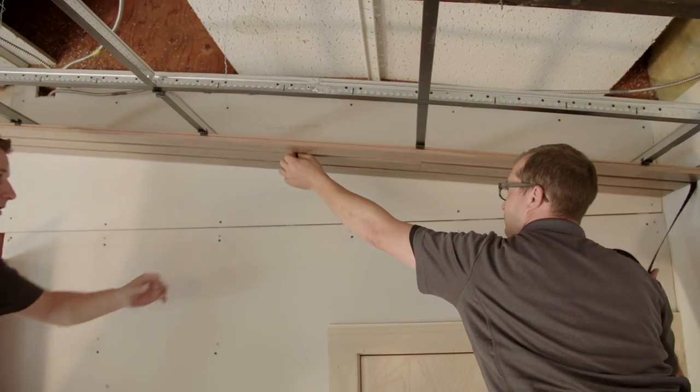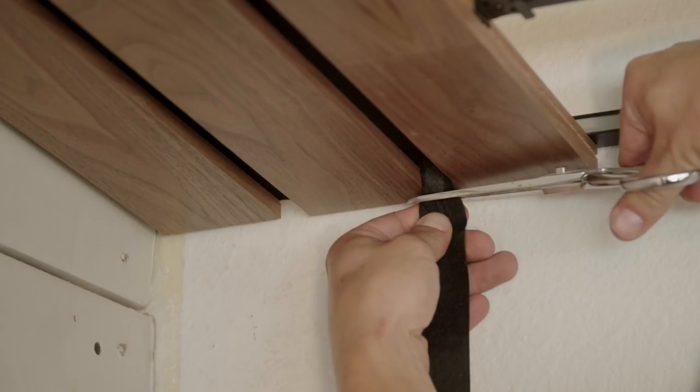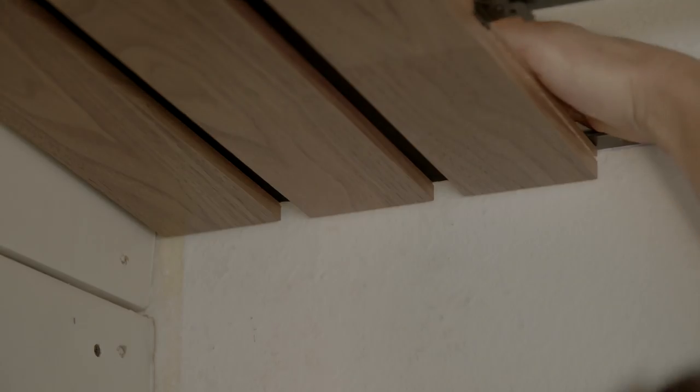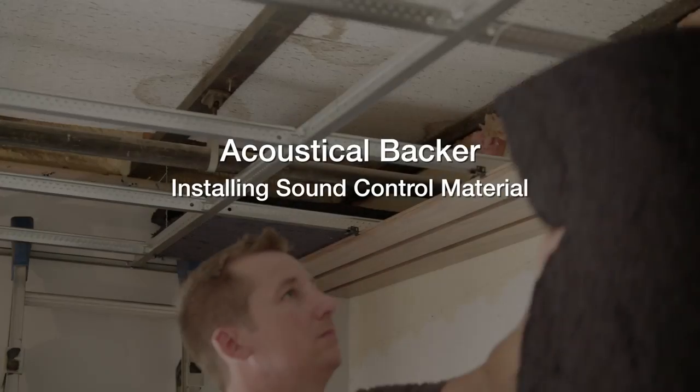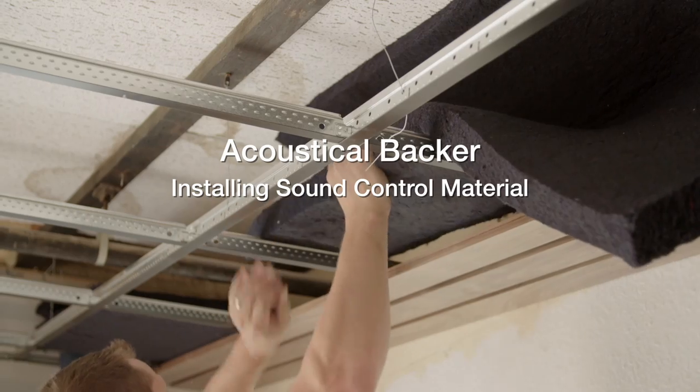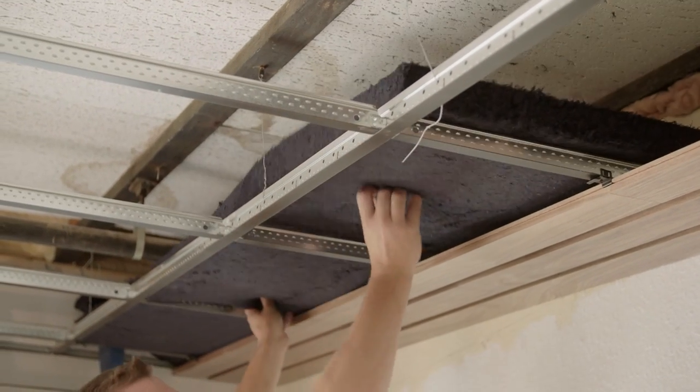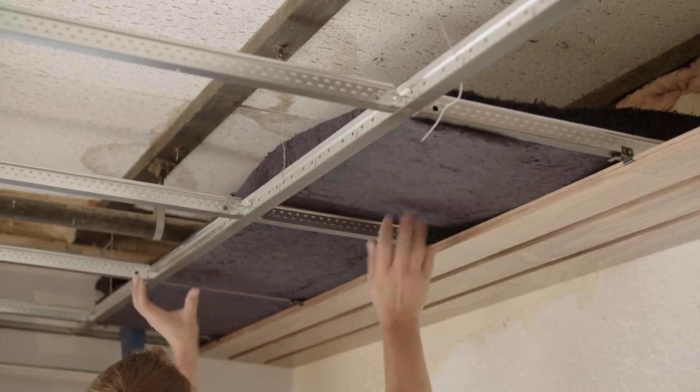As each row is completed, add the filler strip. It's easier to do this row by row than to go back and add the filler strips later. For better sounding rooms, add the recycled cotton sound absorber layer on top of the planks as the ceiling is installed. Again, it's easier to add it every few rows than to try adding it later.